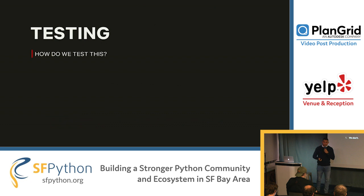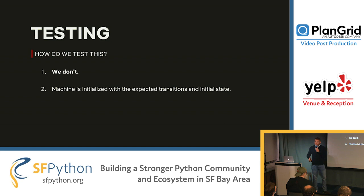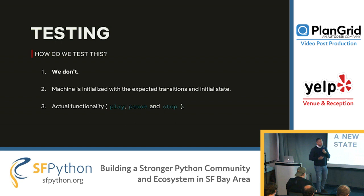So how do we test this? We don't — not in the traditional sense. If you're using a state machine library, you don't have to focus on testing that you can transition from one state to another, or that the business rules are enforced. Instead, you can focus on testing that the machine was initialized with the right transitions and the right initial state, and then focus all your efforts on testing the play, pause, and stop functions without caring about the state.